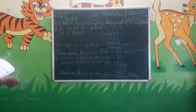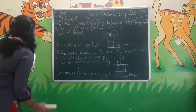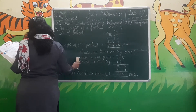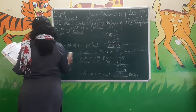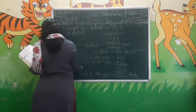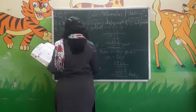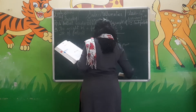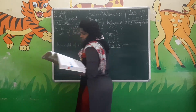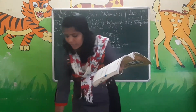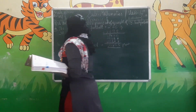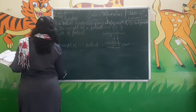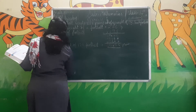Now come for the 8th problem. The cost of one shirt is Rs. 789. Find the cost of 55 such shirts. The cost of one shirt is 789. For 55 shirts, what will be the cost? Now we have to find the cost for 55 shirts.